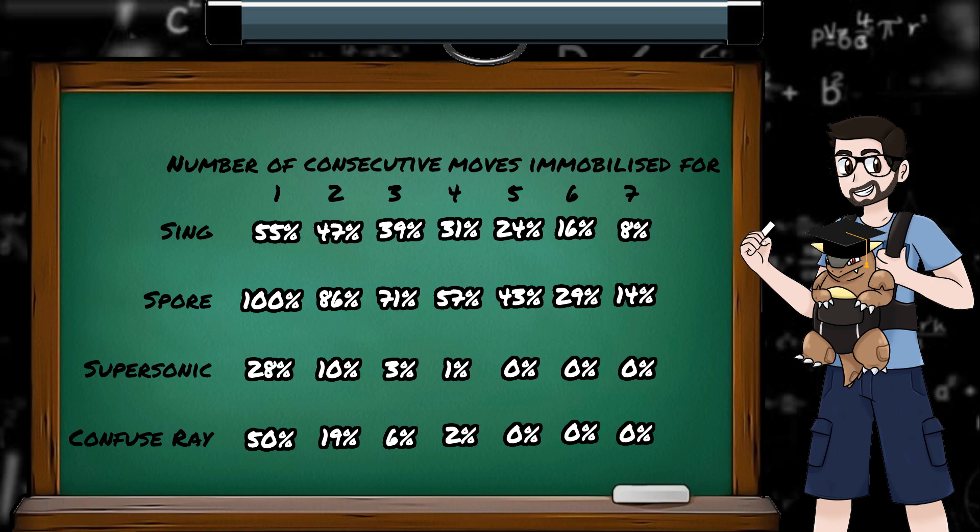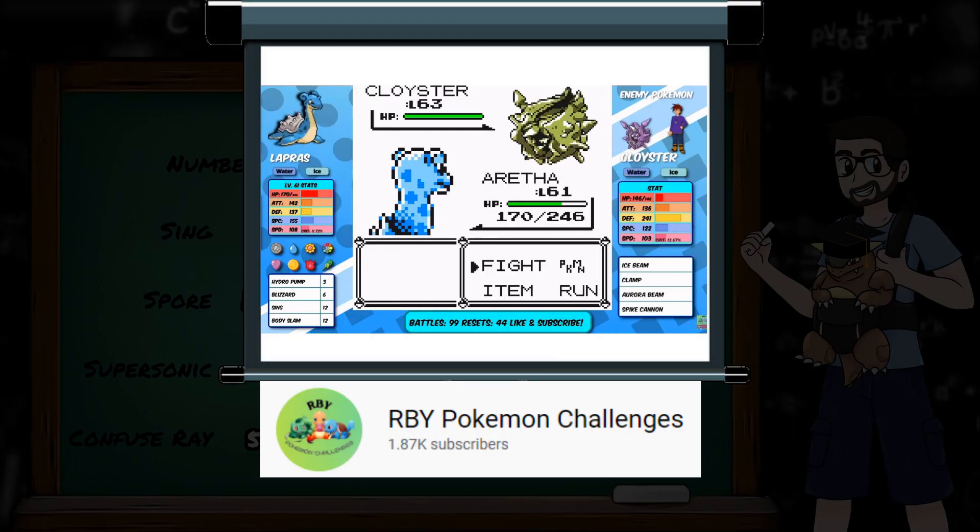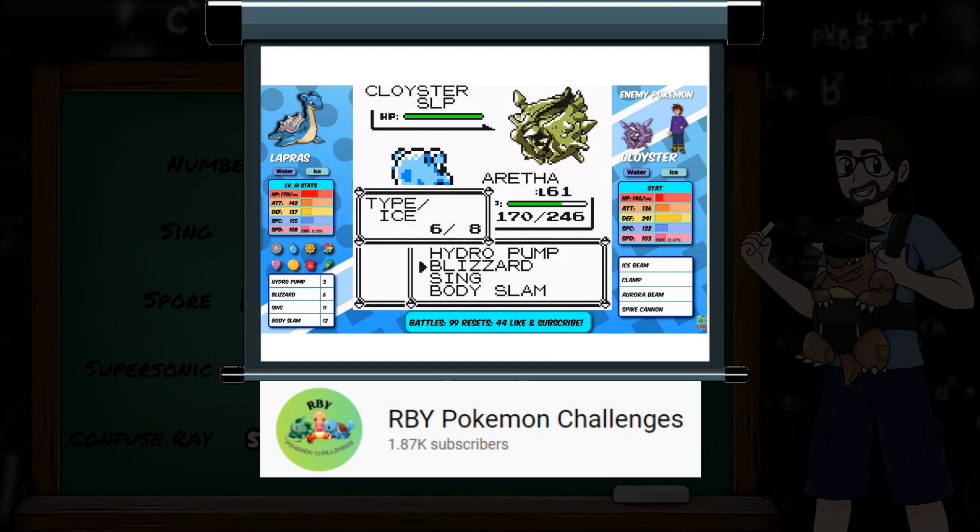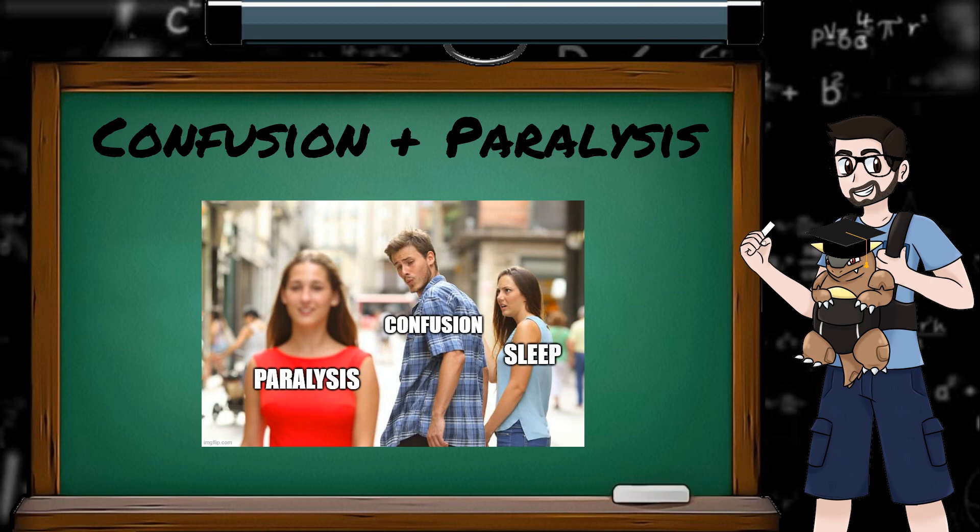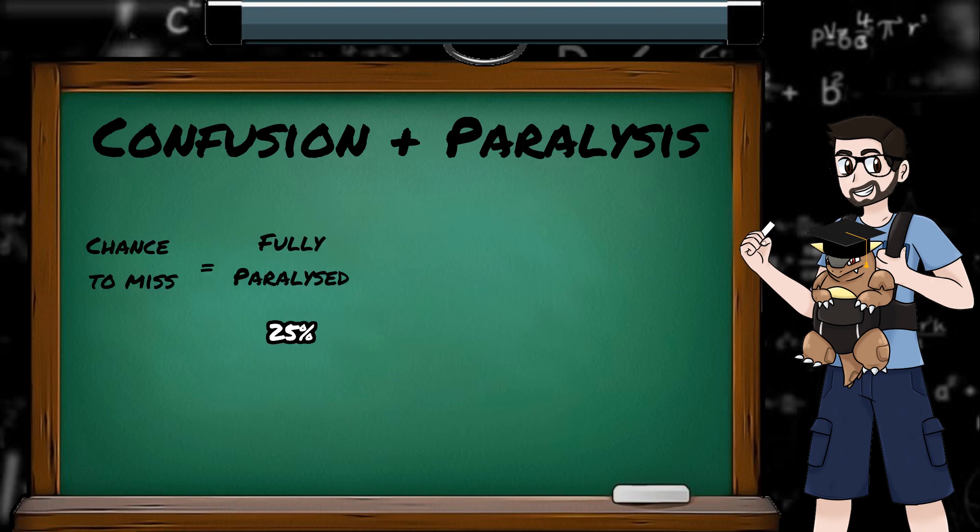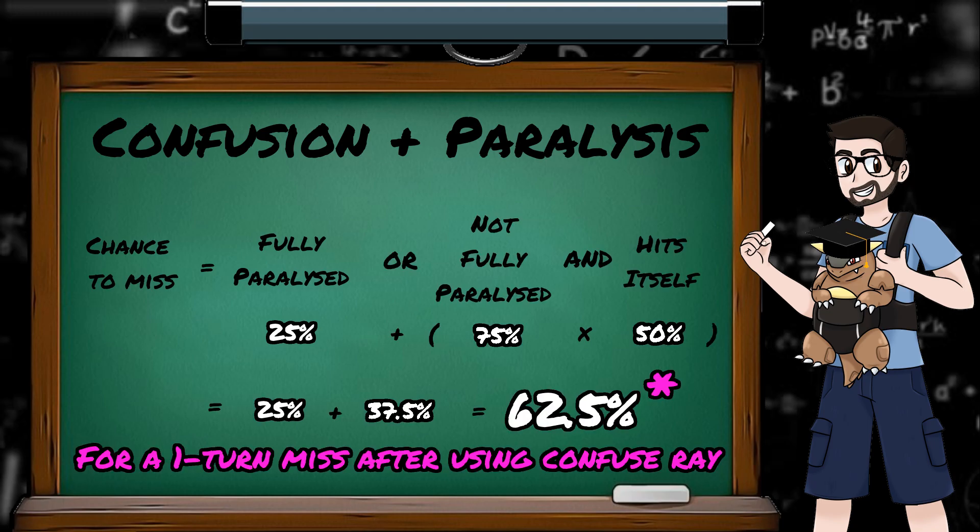So in conclusion, if you're resetting for perfect luck, don't be fooled by 100% accurate Confuse Ray when you have a sleep move on your side. Even one as inaccurate as Sing can double your odds. The worst sleep move is miles better than the best Confusion move at getting your opponent to miss turns. Teo made the right decision in his run, as he used Sing as opposed to Confuse Ray, and eventually got the win. To give Confusion a bit of credit before we end, it can be paired with other status conditions which sleep can't. Paralysis and Confusion is a great combo, that makes it so the opponent has a 25% chance to miss a turn due to being fully paralysed. Or if they didn't get fully paralysed, but instead hurt themselves in Confusion, that's 37.5%, which gives them a total chance of 62.5% to miss their turn.